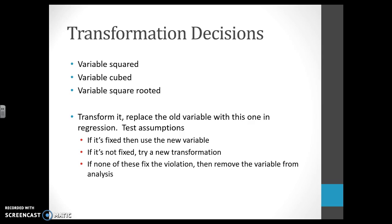Transformation. If you have to transform a variable, you kind of have three choices. You can square it, you can cube it, you can square root it. If you transform it, then you replace the old variable with this new transformed one, rerun the regression, test the assumptions, and you see what happens. If the graph is now fixed, so if the plot looks like you want it to, great, then we're going to use that one, the new transformed one, forever.